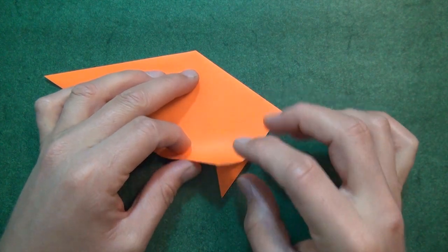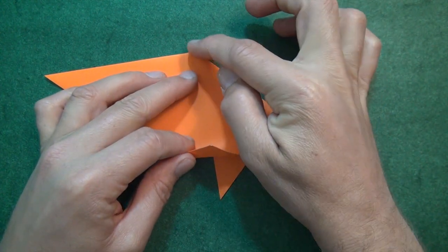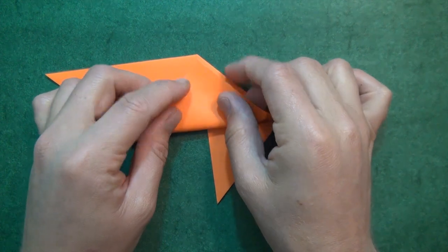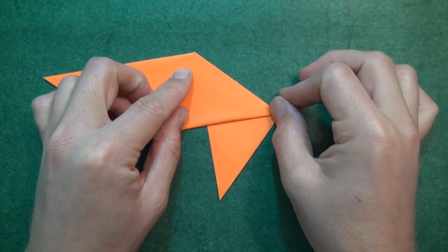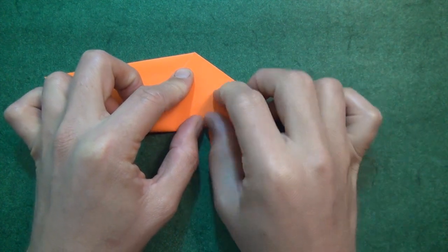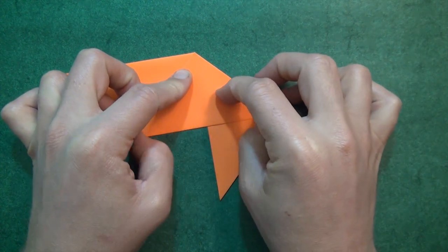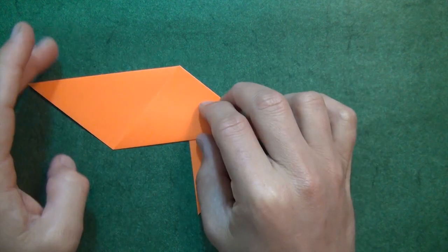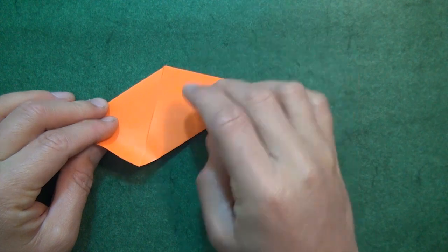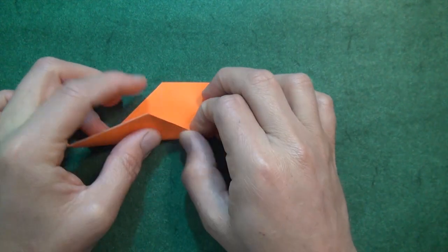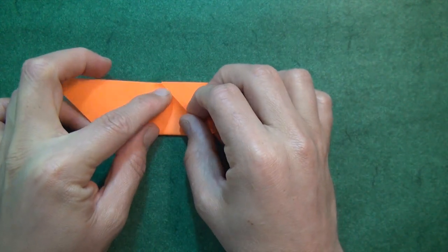And now let's fold these two flaps up to this point. And now let's fold this corner up to here. Try to make your folds exact.